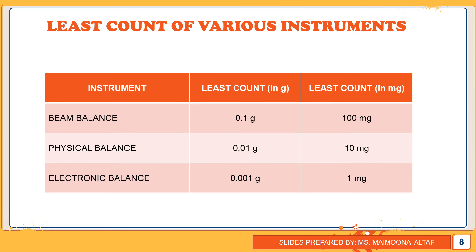We will now compare the least count of the three instruments: beam balance, physical balance, and electronic balance. The least count in grams for beam balance is 0.1 gram. For physical balance, it is 0.01 gram. And for electronic balance, it is 0.001 gram.